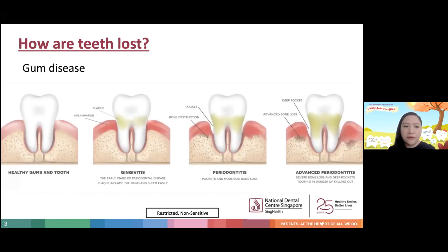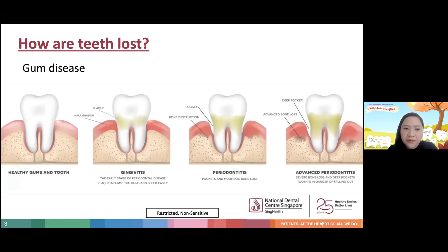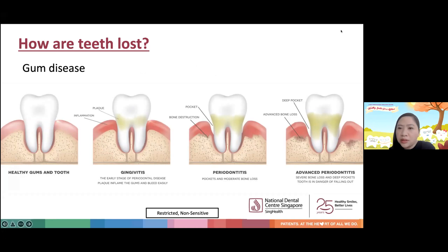Another common reason for tooth loss is gum disease. The image on the left shows a healthy tooth on healthy gums. If not maintained properly, when plaque builds up, it leads to inflammation of the gums, leading to gingivitis, which is an early stage of gum disease. Further on, it can lead to periodontitis, whereby there are pockets — a gap between the teeth and the gums — leading to bone loss. If the bone loss is advanced, it may lead to advanced periodontitis, causing the tooth to become shaky and necessitating extraction.